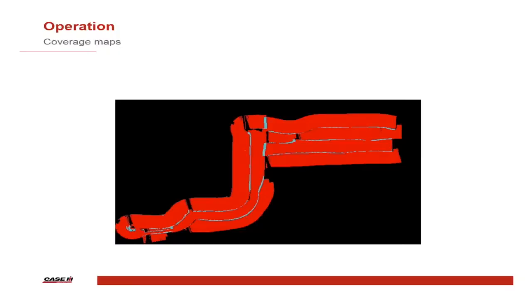Coverage maps are an integral part of how AIM Command Pro functions. Anytime turn compensation or overlap control is enabled, a map is created of each nozzle. These maps are critical, but understanding how to use them is even more important.